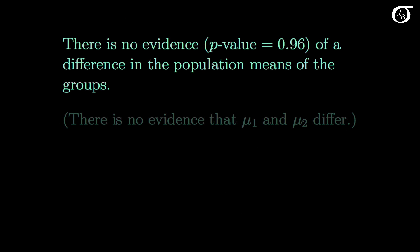We learned long ago that the smaller the p-value, the greater the evidence against the null hypothesis. And we have this large p-value of 0.96 here. So there is no evidence against the null hypothesis. There is no evidence of a difference in the population means of the groups.